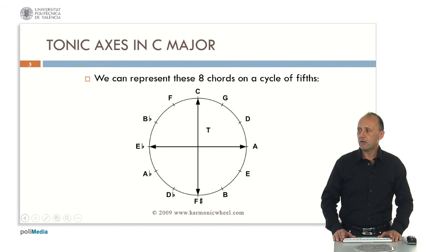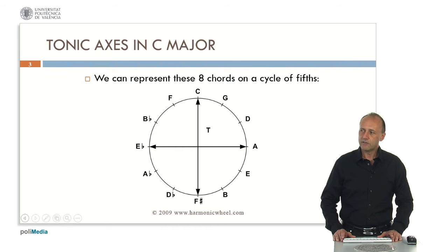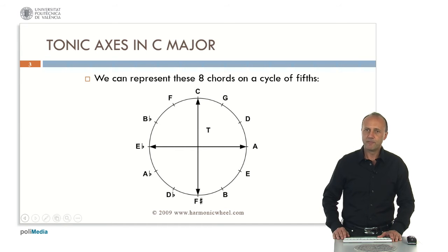We can represent these eight chords, as we can see here, and we observe two axes: the primary axis with chords C major and minor and F sharp major and minor, and the secondary axis with chords A major and minor and chords E flat major and minor.